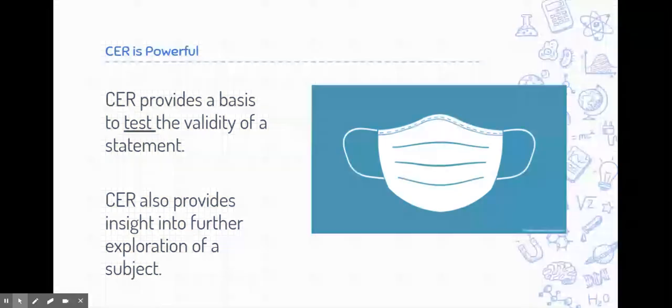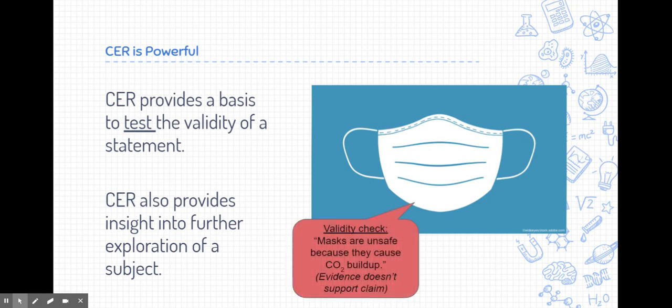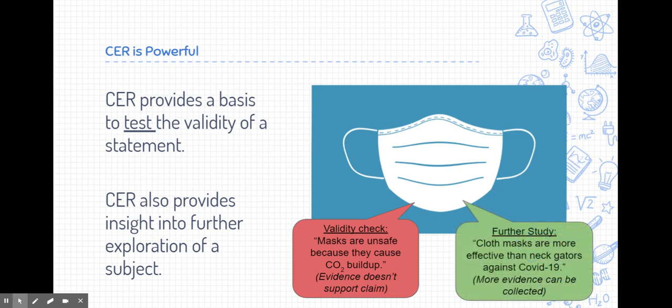CER is very powerful, which is why we want you guys to use it. CER provides a basis to test the validity of statements. In this world nowadays, people have so many different claims, but if they don't have evidence or reasoning to support it, that's not good. For example, we can check the validity of many claims from the coronavirus pandemic that's most recent. Many people claim that masks are unsafe, and they even provide reasoning because they cause CO2 buildup. But when we actually go and check the evidence against that claim, we find that that evidence doesn't support the claim. CER is also powerful because it provides insight into further exploration of a subject. Going back to our masks example, we can further study this process. Our cloth masks are more effective than neck gaiters against COVID-19. We can go and collect more evidence to support one way or the other.